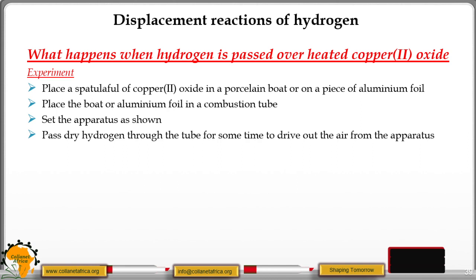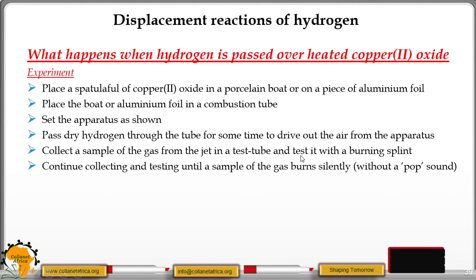Pass dry hydrogen gas through the tube for some time to drive out the air from the apparatus. Collect a sample of the gas from the jet in a test tube and test it with a burning splint. Continue collecting and testing until a sample of the gas burns silently without a pop sound.